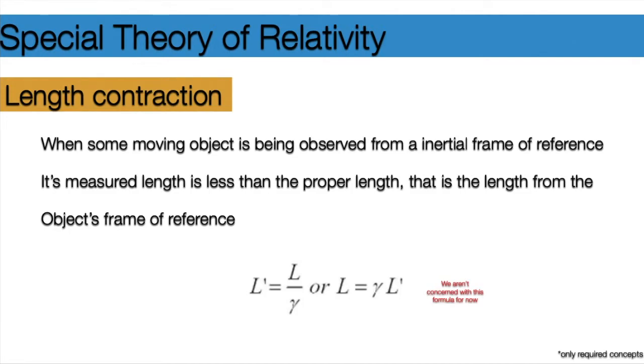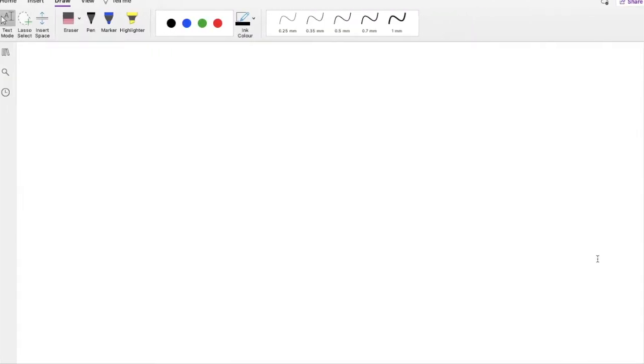Now, what exactly is length contraction? As you can see here, when some moving object is being observed from an inertial frame of reference, its measured length is less than the proper length. Now, proper length here signifies the length of the object from the object's frame of reference. Proper length is the length of the object when the object is actually stationary. I'll explain it a bit more here.